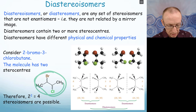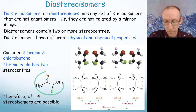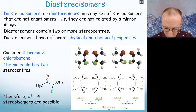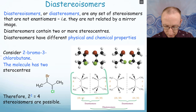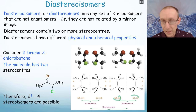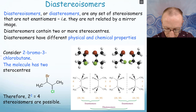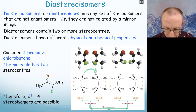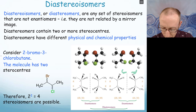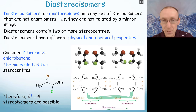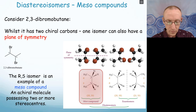Looking at the structure of 2-bromo-3-chlorobutane, it has two stereogenic centers, so there are 2^2, or four possible stereoisomers: 2R3S, 2S3R, 2R3R, and 2S3S. We can group those in terms of enantiomers: 2R3S is an enantiomer of 2S3R, and 2R3R is an enantiomer of 2S3S. But if we compare the RS to the RR or the SS, those relationships are between diastereomers — molecules that are not mirror images of each other but different three-dimensional arrangements.